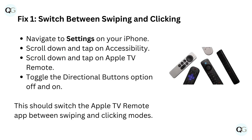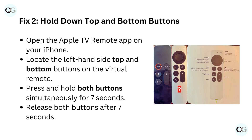Fix 1: Switch between swiping and clicking. Navigate to Settings on your iPhone. Scroll down and tap on Accessibility. Scroll down and tap on Apple TV Remote. Toggle the directional buttons option off and on. This should switch the Apple TV remote app between swiping and clicking modes.